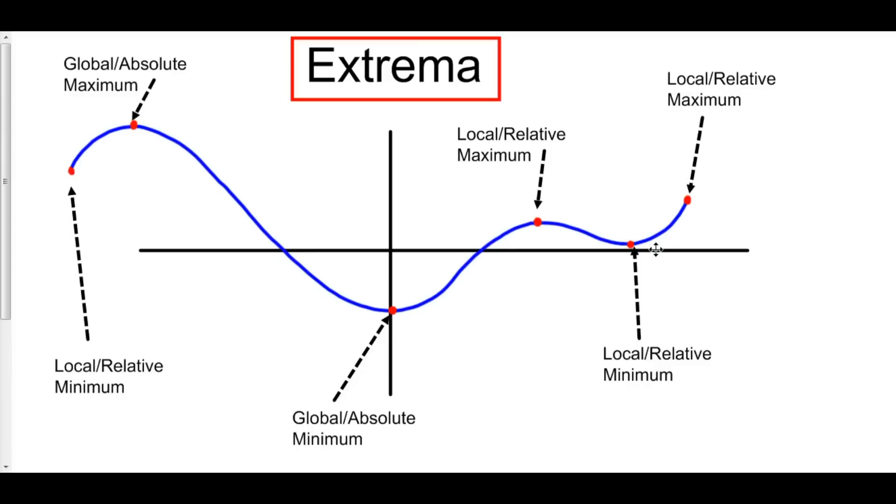Here we have a local minimum. And finally, here's our last one. This is a local max right here. So our endpoints tend to be local max or min. And all interior points are local maxes and min when they are greater or less than all of the surrounding points around them.